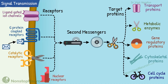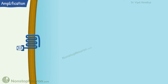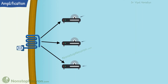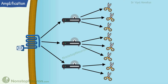As the signal is being transferred, other important things also happen. These are amplification and integration of signals. First, amplification: one upstream molecule can activate or generate multiple downstream messengers. For example, this messenger can activate 100 downstream messengers, and they in turn can activate thousands of downstream messengers. Thus, the signal is amplified as it travels towards the target protein.